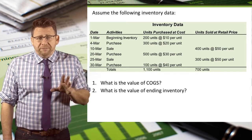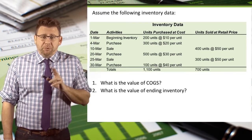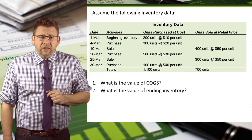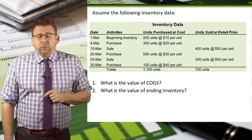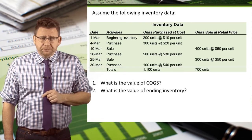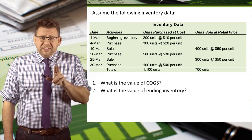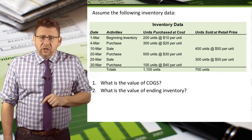March 25th, we sold 300 units at a price of $50 each. Finally, March 30th, we purchased 100 units at $40 each. So with this data and using FIFO, let's determine the value of ending inventory and the amount of cost of goods sold that should be recorded.